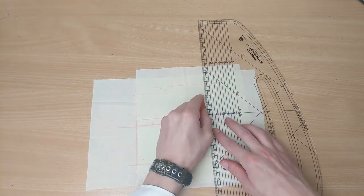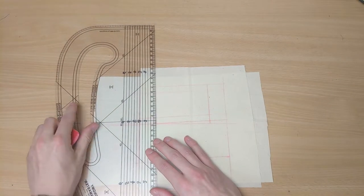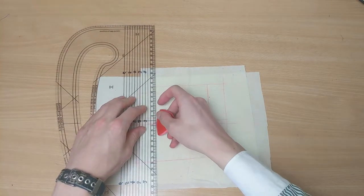Mark either side of the pocket on the welt. Cut the two out, and best mark the wrong sides as well.